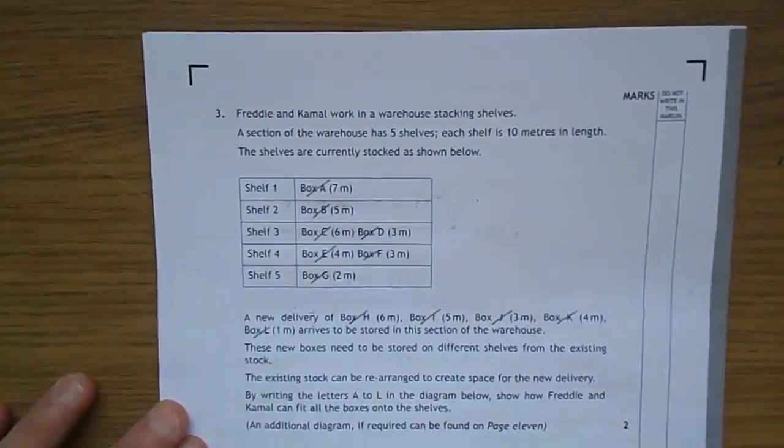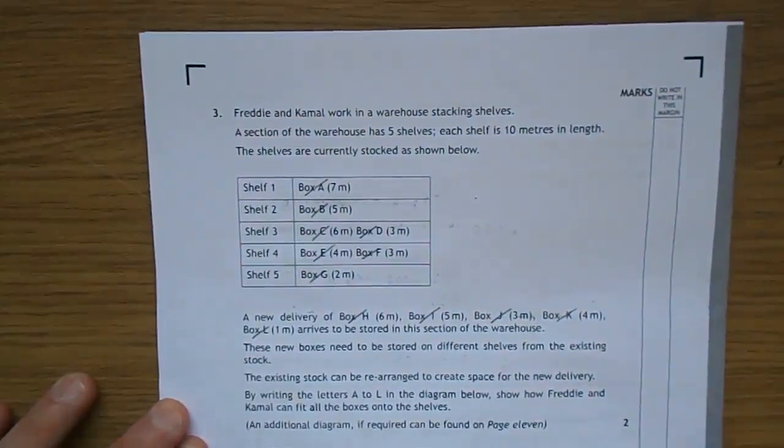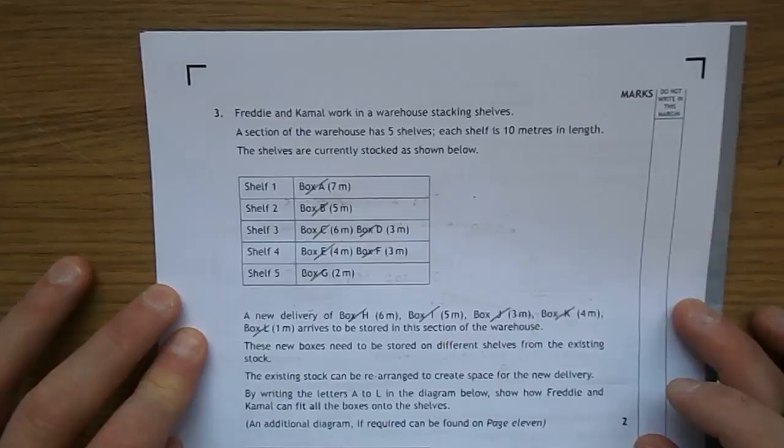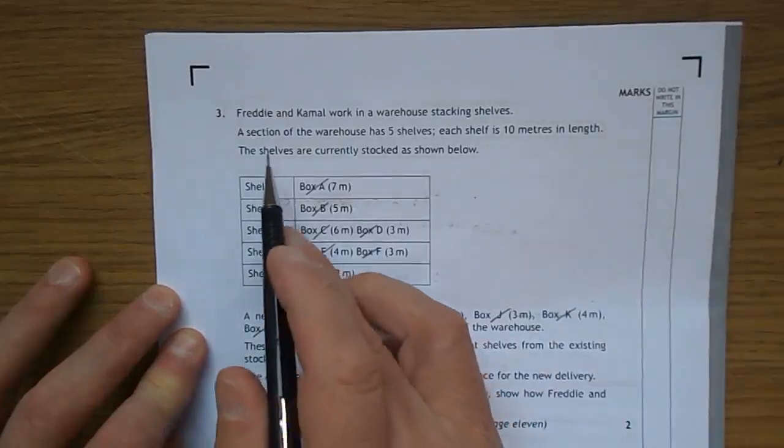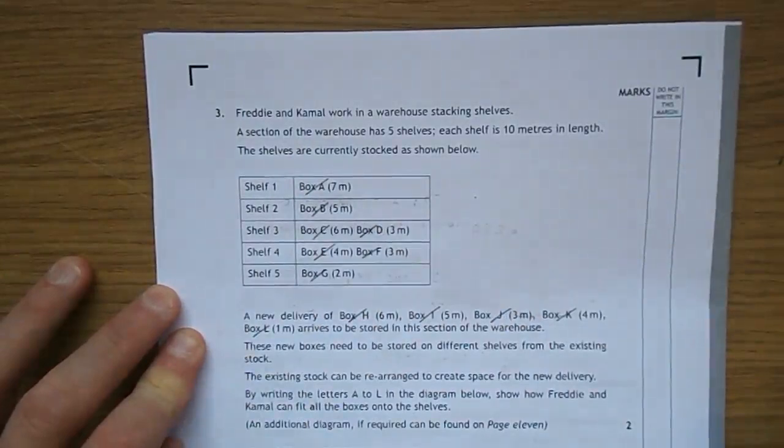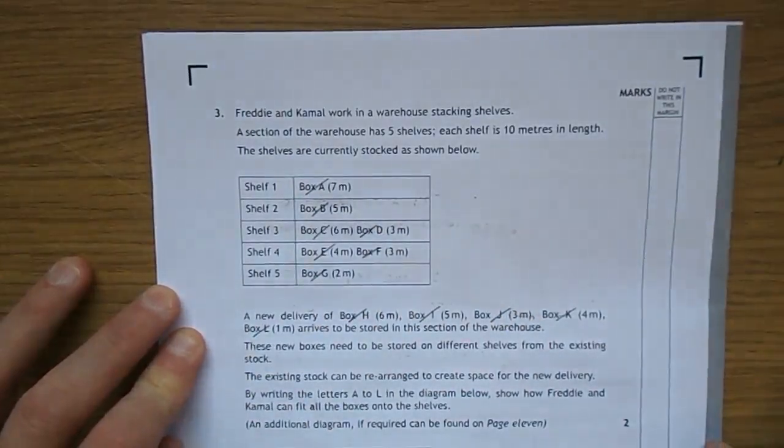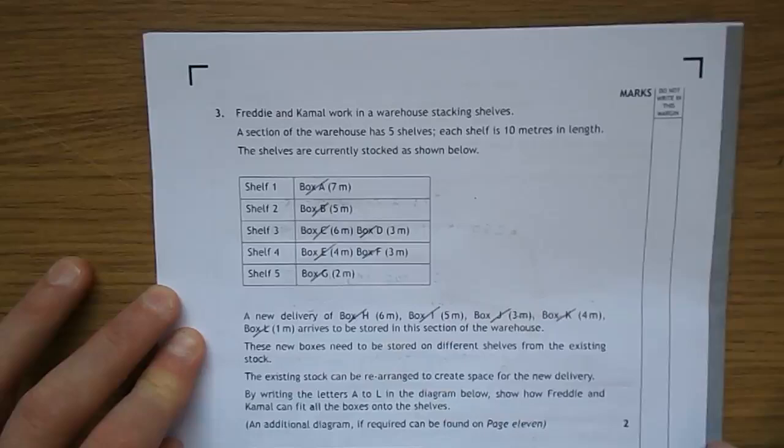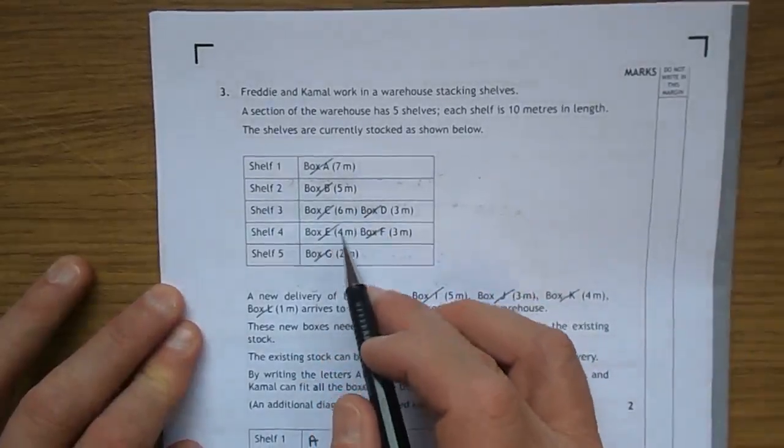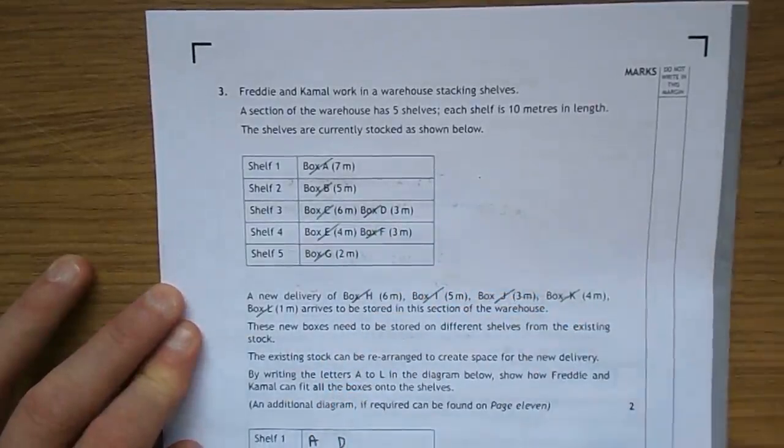Okay, and here we have the SQA 2015 National 5 Life Skills Mathematics, paper 1, question 3. Freddie and Kamal work in a warehouse stacking shelves. A section of the warehouse has 5 shelves, each shelf is 10 metres in length. The shelves are currently stocked as shown, so shelf 1 has got a box A, 7, C, 6, you can see it all there.